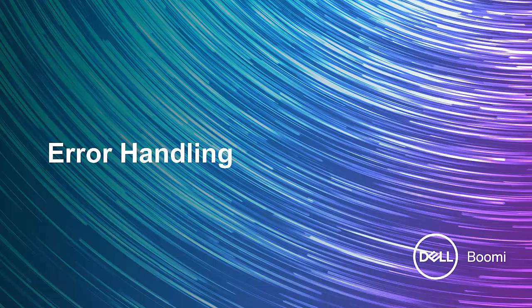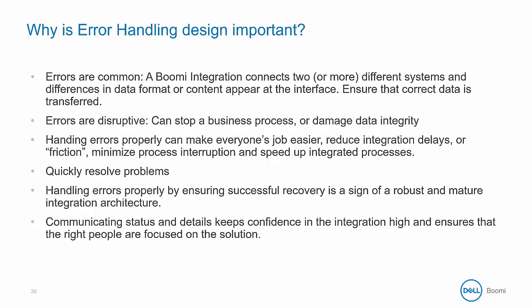We've already looked at document errors in this module and how they affect the process. Now we want to see how to handle errors within our process. Error handling is important because despite our best efforts to avoid errors in our processes, they will happen and they are common. Errors are disruptive and can cause business to slow down or even stop. But if we can handle errors properly, then we can reduce these delays, helping you to quickly resolve problems and get your processes working again.